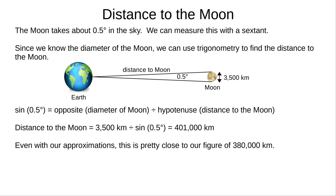Now, with a little bit of trigonometry, the distance to the moon is 3,500 kilometers divided by the sine of 0.5 degrees. And that gives us 401,000 kilometers. Pretty close to the accepted value of 380,000 kilometers for the Astronomy GCSE.